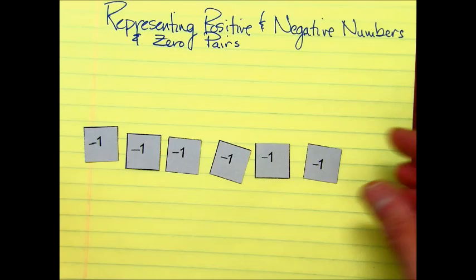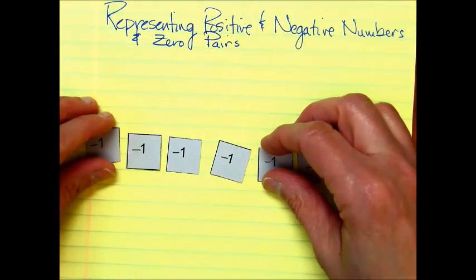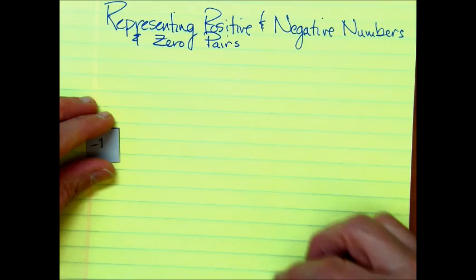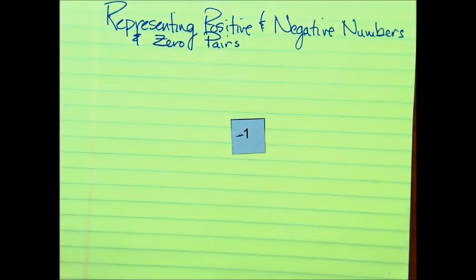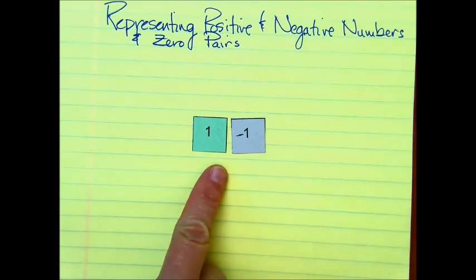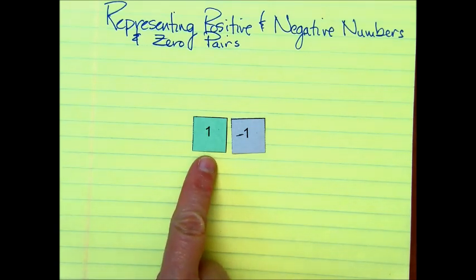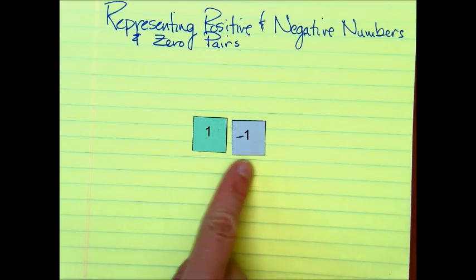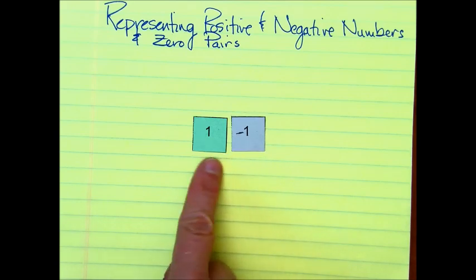Before we move on to representing numbers, I want to share with you zero pairs. I'm going to take away all but one of these negatives, and then add a positive one. When you have a positive one combined with a negative one, your result is going to be zero. If you think of it in terms of money: I have a dollar, but I owe a dollar, and I'm left with no money at all. So this is referred to as a zero pair, because when you combine the positive amount with the negative amount, your ending result is zero. They represent zero.